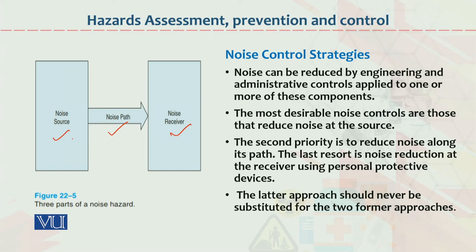Engineering Control, dear students, involves technical, electronic, mechanical, and mechatronics experts. Administrative Control involves top management, supervisors, marketing heads, and finance heads. So if you want noise control, you need both technical and administrative control applied together in the organization.